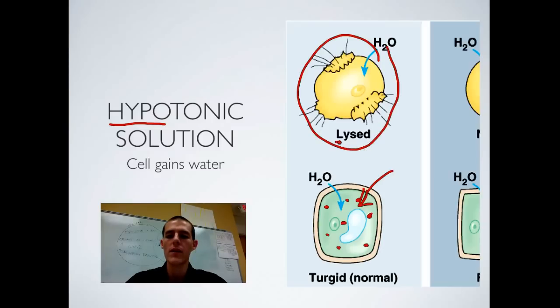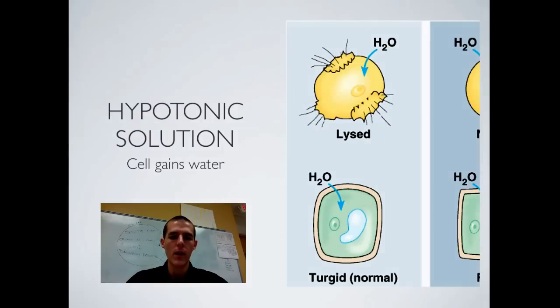In an animal cell, this is called lysis. Lysis means to break. Now in a plant cell that has a cell wall, that vacuole is going to absorb the water and it's going to become turgid, which means that this vacuole pushes up against the sides of that cell wall and causes the cell to swell. But it won't burst because it has a cell wall around it.